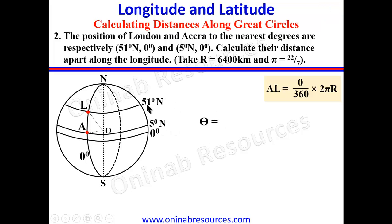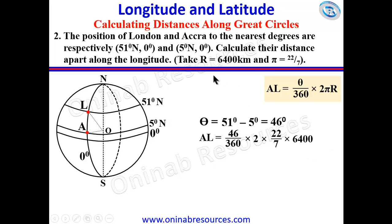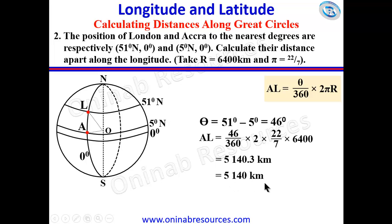Arc AL has the formula: AL = (theta / 360) × 2πR. To calculate theta: since both points are in the north, we subtract — 51 minus 5 = 46 degrees. So AL = (46/360) × 2 × (22/7) × 6400 = 5140.3 kilometers, which to three significant figures is 5140 kilometers — the approximate distance between Accra and London.